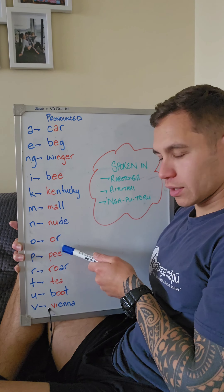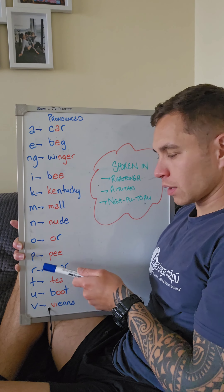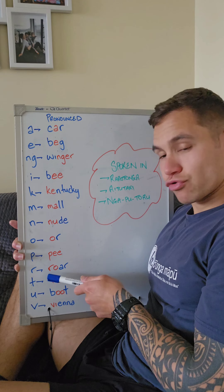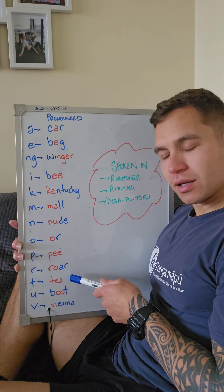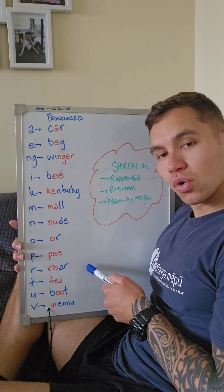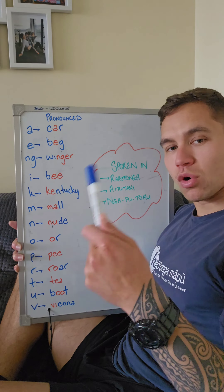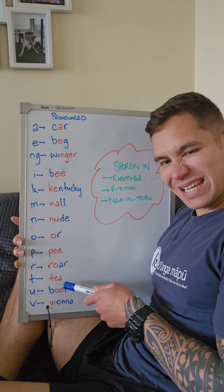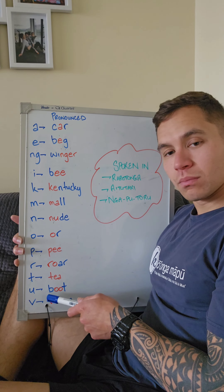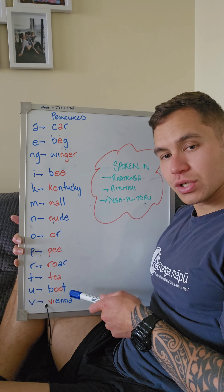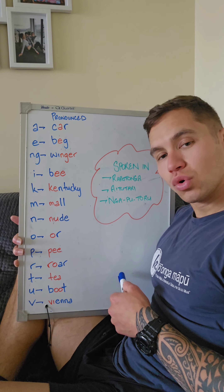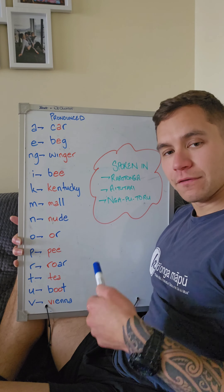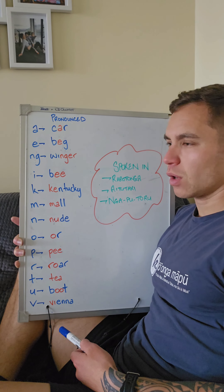O — o. Pi. Raw — ro. With raw, you've got to roll your R's. T — root — u. Viena — v. Hopefully that helps.